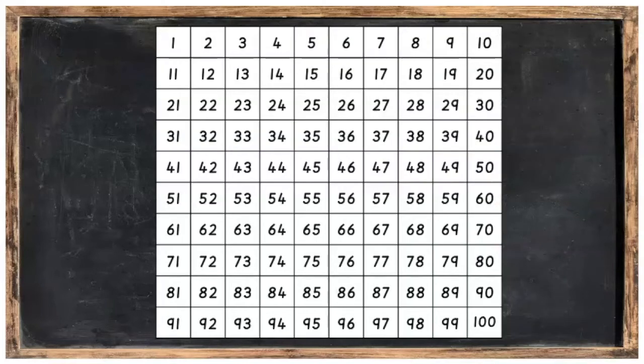Here we're going to skip count on the hundred square. So we'll start off with three. And to get to the next number, we have to hop on, or count on, three spaces. You can count with me. So, hop one, hop two, hop three, and we're going to land on six.